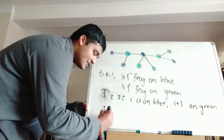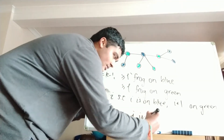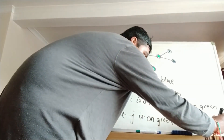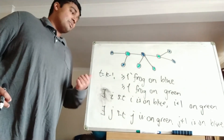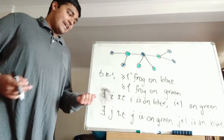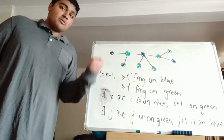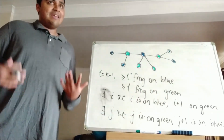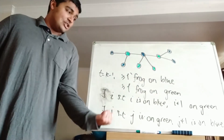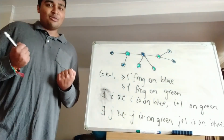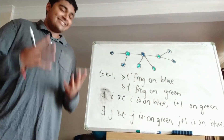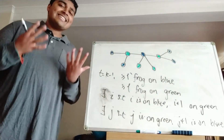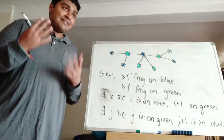There exists i such that i is on blue and i+1 is on green. Similarly, there exists j such that j is on green and j+1 is on blue. When they jump at time t=k, frog i moves from blue onto a green lily pad, and frog j moves from green onto a blue lily pad. So after time t=k you have i on green and j on blue — hence at least one frog on blue and at least one on green. That proves our claim by induction, showing that at any point there's always at least one frog on blue and one on green, so they can never all be on the same lily pad.